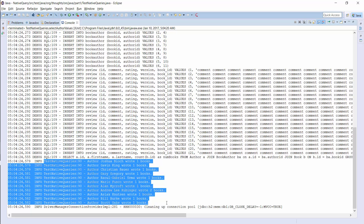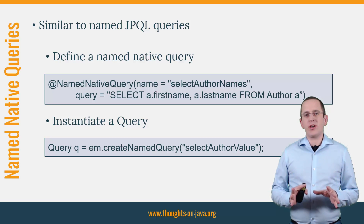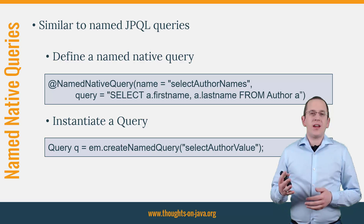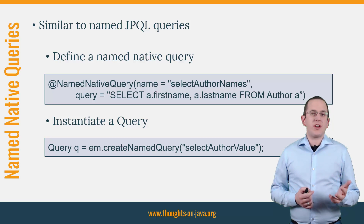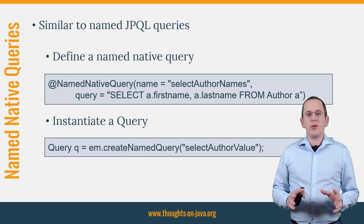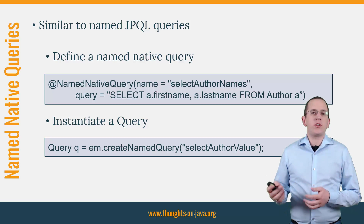And now to the final part of this video: NamedNativeQueries. When you know named JPQL queries, it will be no surprise that you can also create named native queries. As you can see in the code snippet, it's defined in a similar way as named JPQL queries — you just have to provide a name and a native SQL statement to a NamedNativeQuery annotation. You can then instantiate this query by calling the createNamedQuery method with the name of your named native query and use it like any other query.